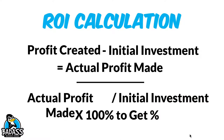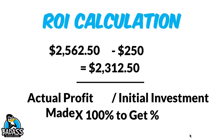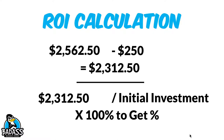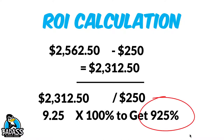Let's grab our ROI calculation and see the potential return. We take the profits made and subtract the initial investment: $2,562.50 minus $250 gives us $2,312.50. We then divide that by the original $250 invested, giving us 9.25. Multiplying by 100%, our ROI would be a 925% return. That is awesome — that is a great return on your cash.